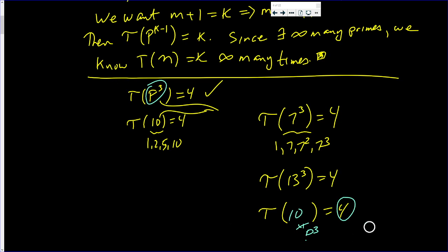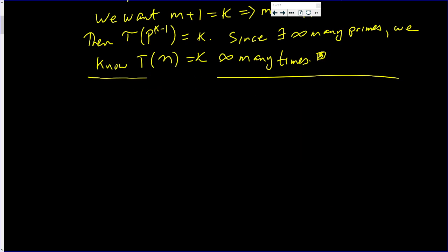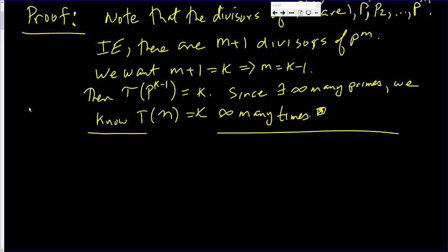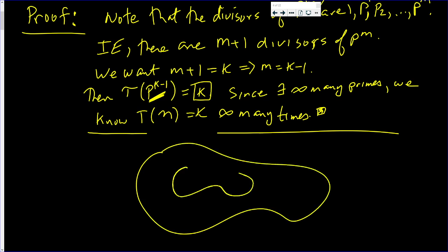So, by no means am I saying that I gave the form of each and every type of number where tau of it is equal to k. I just showed infinitely many. So you have infinitely many, and of those infinitely many, there's infinitely many of the form p to the k minus 1. But there's many others.